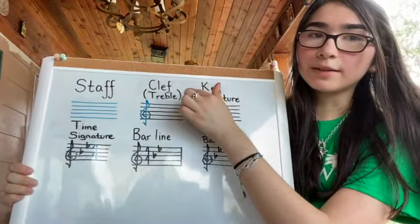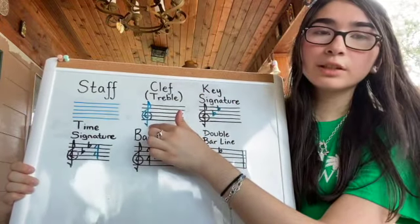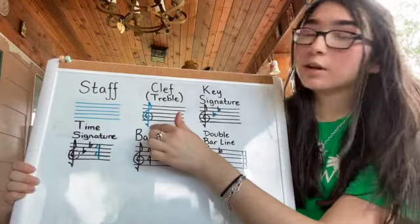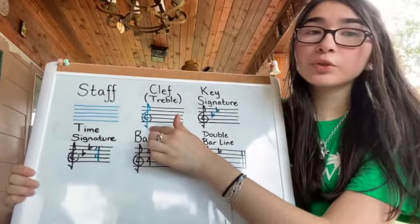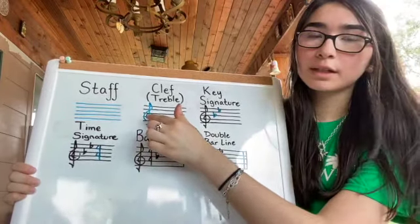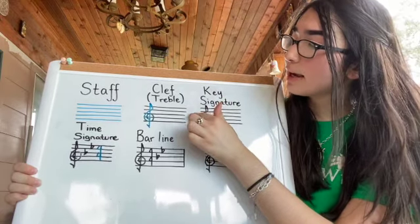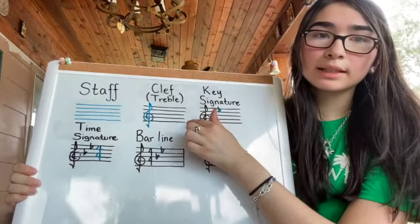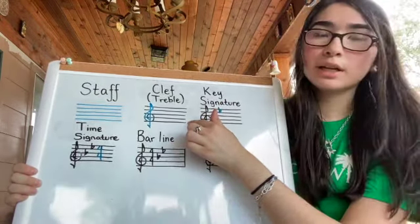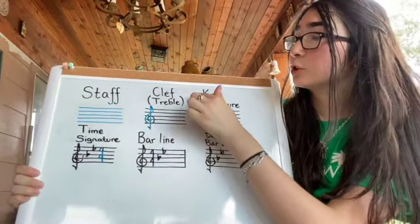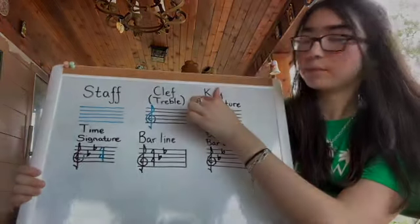Next, we have the clef. The clef is the first thing you'll see on every line on a piece of sheet music. Flutes read in treble clef. Every line and space has its own designated letter name, which we'll learn in a future video. The treble clef also goes by the name G clef.